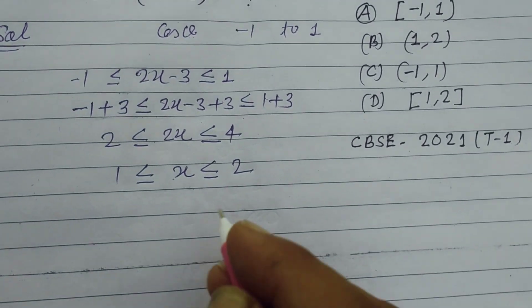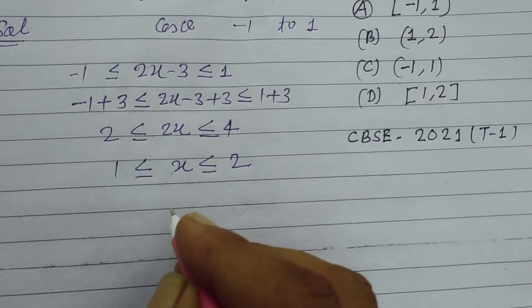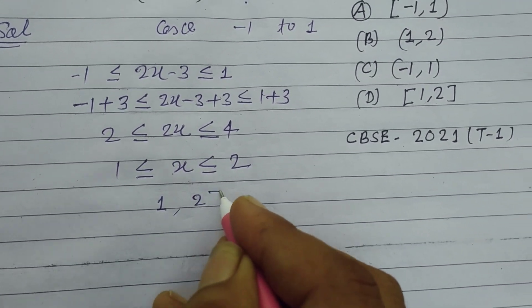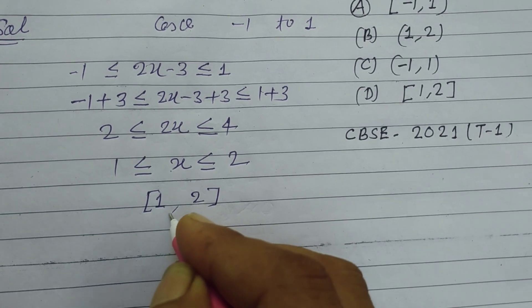Less than equal to 2. So x lies between 1 and 2, which are both included. So [1, 2] is the correct answer of this question.